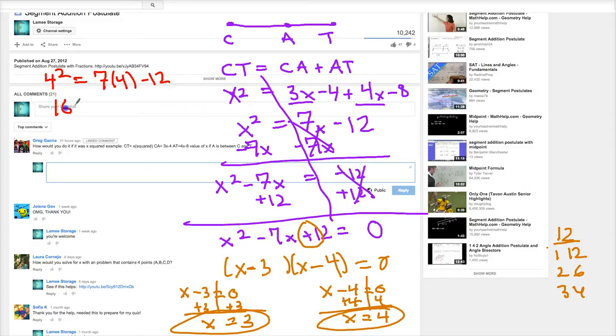4 squared is 16. 7 times 4 is 28 minus 12, which is 16. So things are looking good so far. 4 is a possible answer to this.